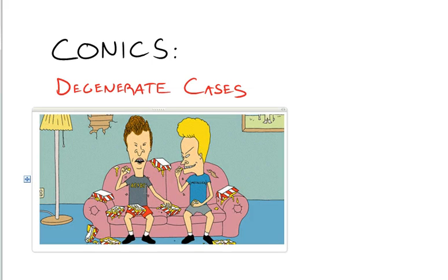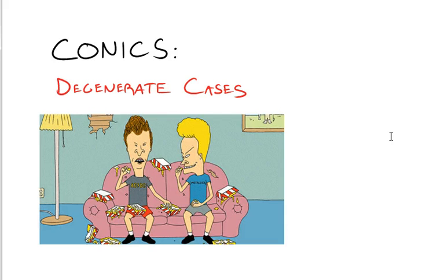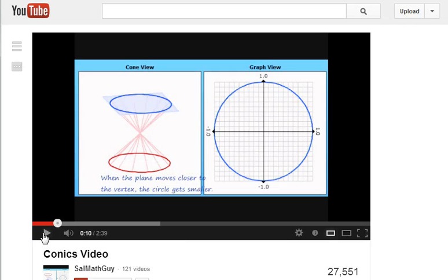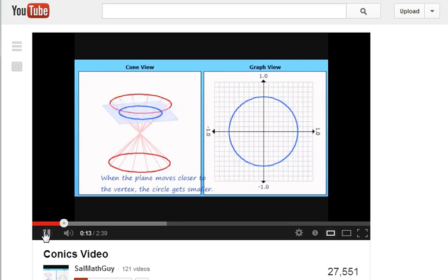Let's take a look at what a degenerate case is of a conic section. In this video, you can see how we get circles by slicing conic sections. If we move the plane up and down, we get circles. Now I can do the same thing with a circle formula.